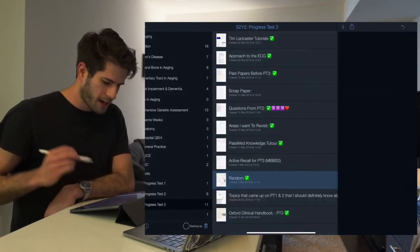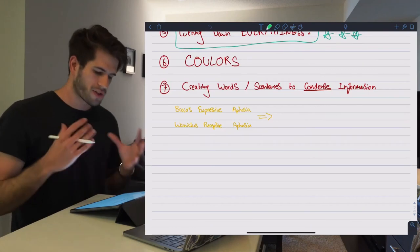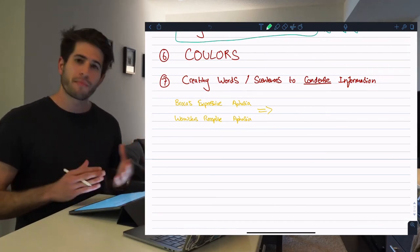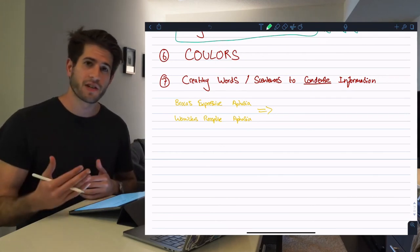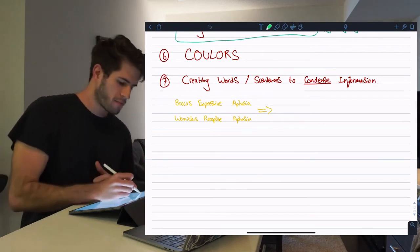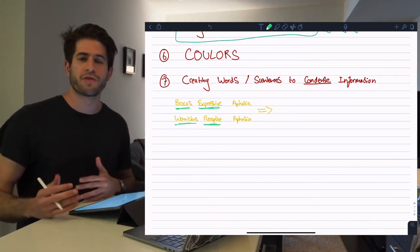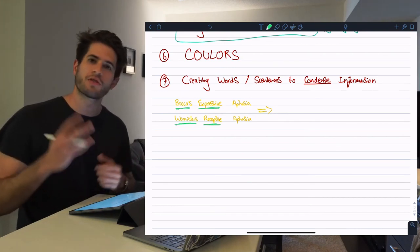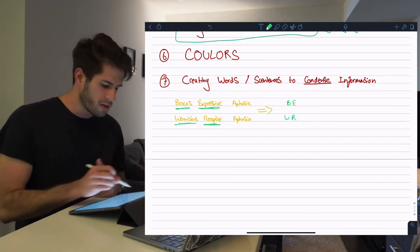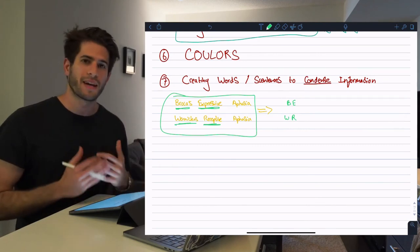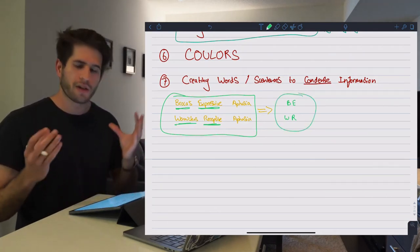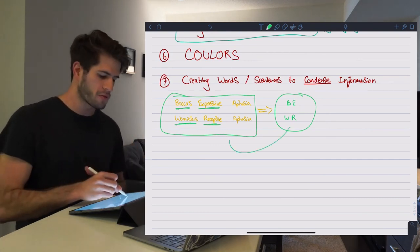Moving back to the random document for the last tip, which I think is very important: creating words or sentences to condense and remember information. A great example is remembering that damage to Broca's area results in expressive aphasia, and damage to Wernicke's area causes receptive aphasia. The two relationships are: Broca's–expressive and Wernicke's–receptive. The first thing I do is cut down all those words into just two pairs of letters: 'BE' for Broca's expressive and 'WR' for Wernicke's receptive. 'BE' is so much simpler to hold in your head than the full terms.